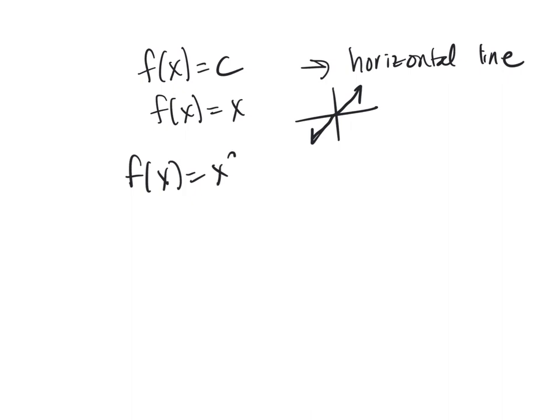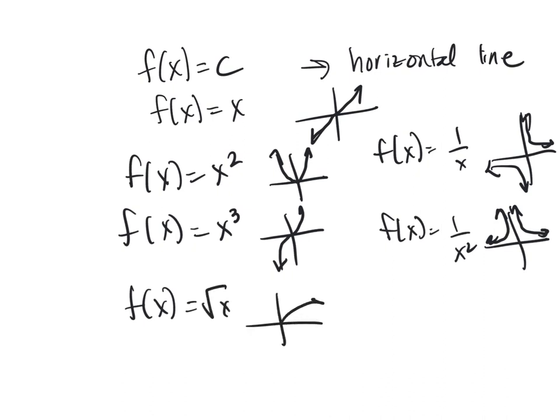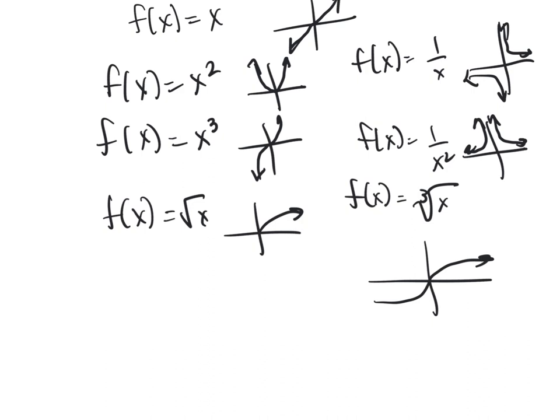You have the basic quadratic function, that's a parabola. You have the basic cubic function that looks like that. You have the reciprocal function which we already talked about a little bit. You have the reciprocal squared function. You have the square root function, that's kind of like a Nike swoosh upside down. You have the cube root function which looks like that. And finally you have the absolute value function which looks like this.